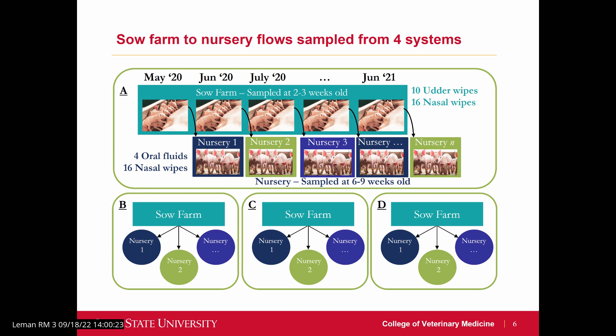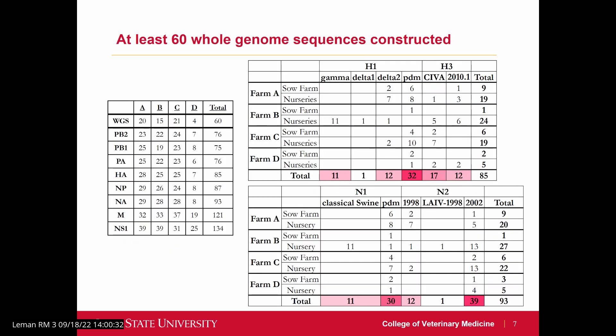The sow farm we're sampling stays the same across the entire study, whereas the nursery will change based on the placement of the pigs. These samples were pooled, and we performed PCR on them, and the ones that were positive for influenza were submitted for whole genome sequencing. We ended up with at least 60 whole genome sequences, which fall into a variety of HA and NA genetic clades.